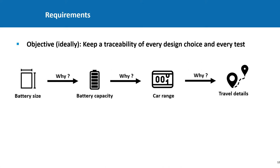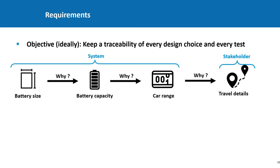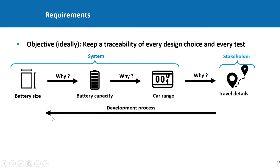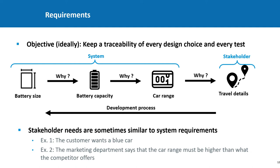We can distinguish, in this chain of requirements, two points of view. There is first the point of view of the user — the stakeholder. And there is the system point of view. It's quite common to call that a need for the stakeholder and these requirements for the system. The development process is in the other direction: you start with the stakeholder needs and then you derive requirements. Even when you have a clear vocabulary in mind, some situations can still be confusing — the stakeholder needs and the system requirements can sometimes be quite similar.